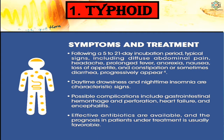Symptoms and treatment of typhoid: there is a 5 to 21 days incubation period. Typical signs include diffuse abdominal pain, headache, prolonged fever, anorexia, nausea, loss of appetite, and constipation or sometimes diarrhea. Daytime drowsiness and nighttime insomnia are characteristic signs of typhoid. Possible complications include gastrointestinal hemorrhage, perforation, heart failure, and encephalitis.